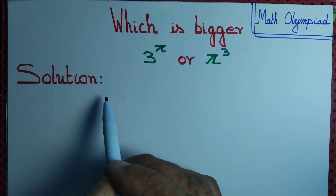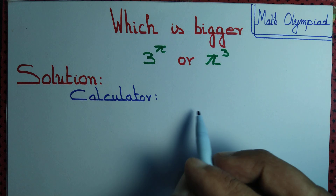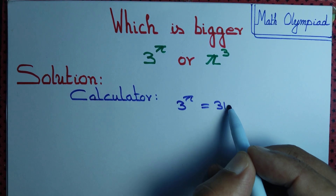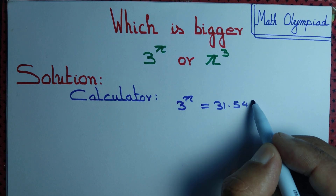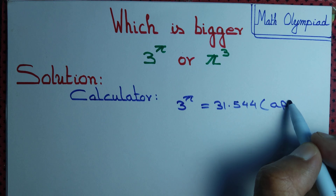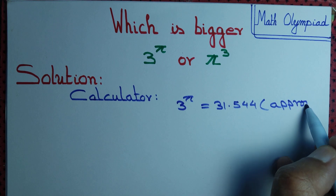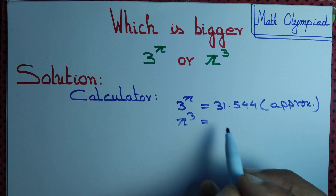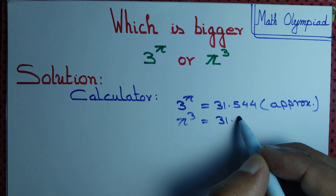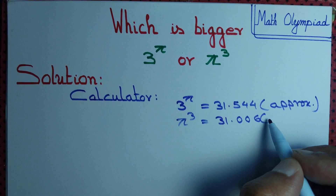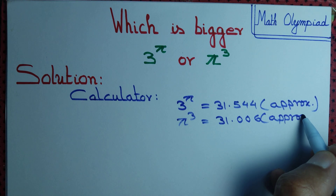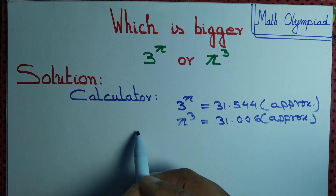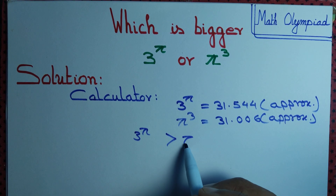We will use a calculator. We find that 3 to the power pi equals approximately 31.544, accurate up to three decimal places. And pi cubed equals approximately 31.006. So we can see clearly that 3 to the power pi is greater than pi cubed.